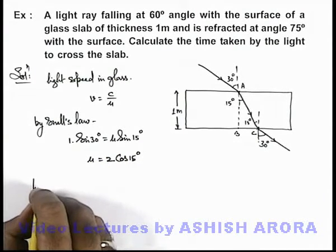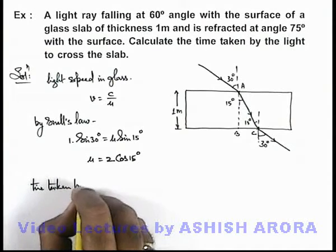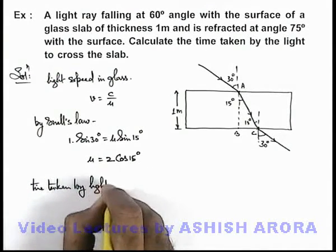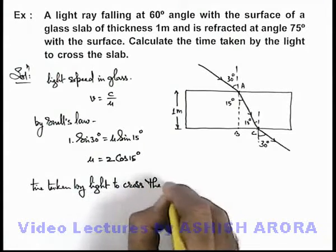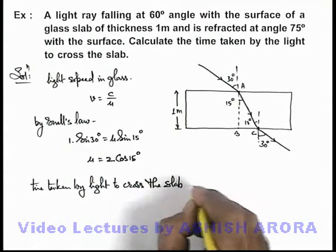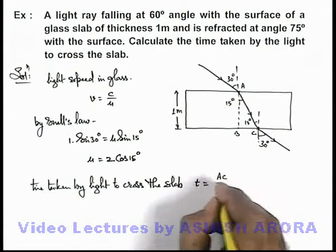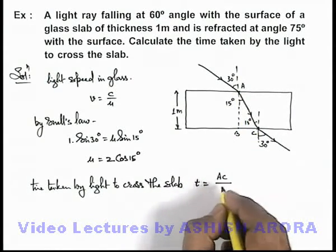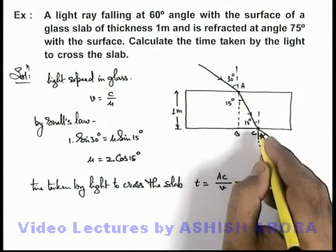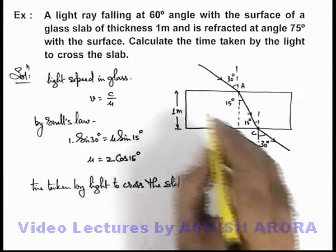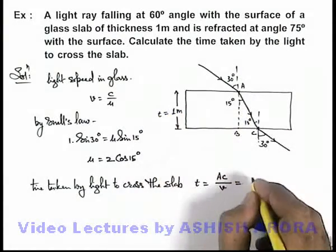Now in this situation, if we wish to calculate the time taken by light to cross the slab, then this time we can write as the distance light ray is traveling is AC divided by the speed of light v. If we substitute the value, AC we can write as the thickness of this glass slab is 1, so this is t by cos 15.